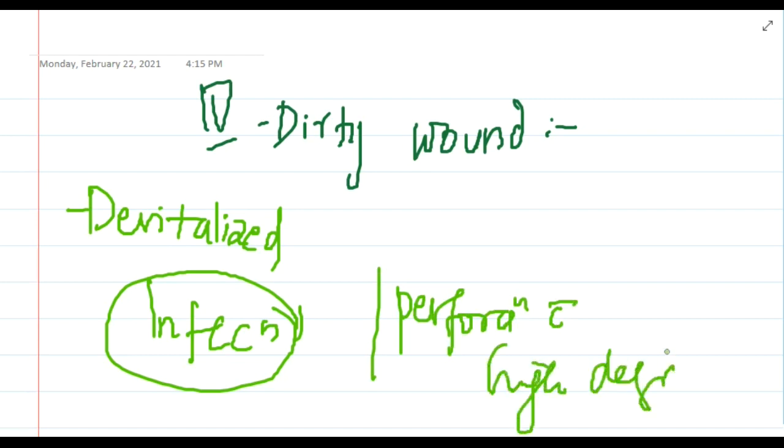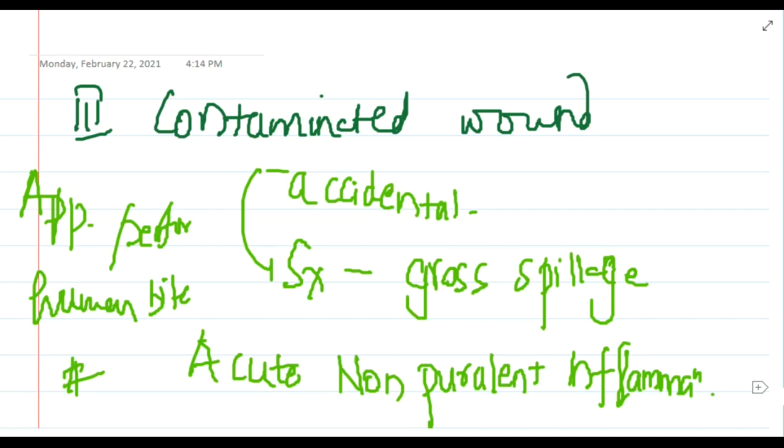The organisms causing post-operative infection are already present in the wound. This dirty wound is associated with severe inflammation. Examples of dirty wound include perforated peritonitis, perforated diverticulitis, and fecal peritonitis.